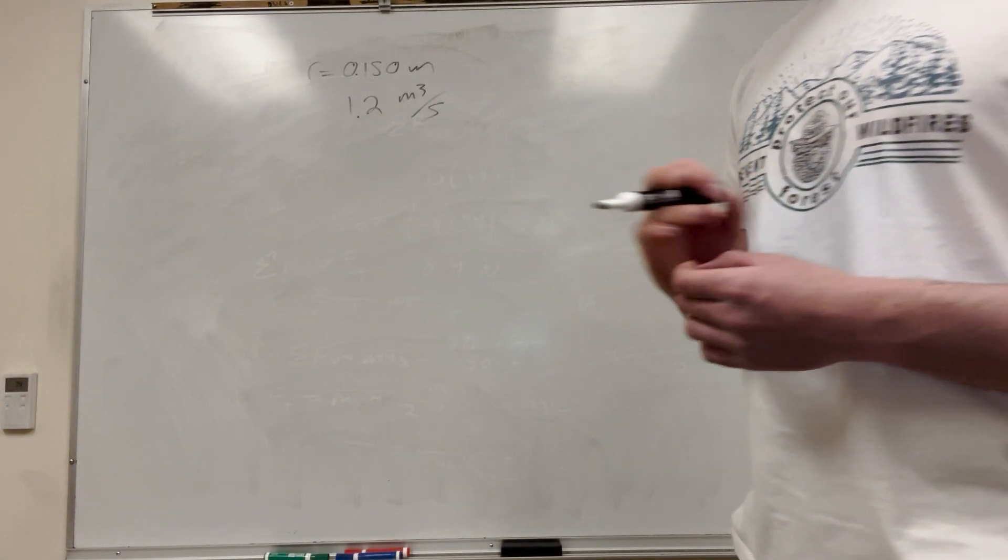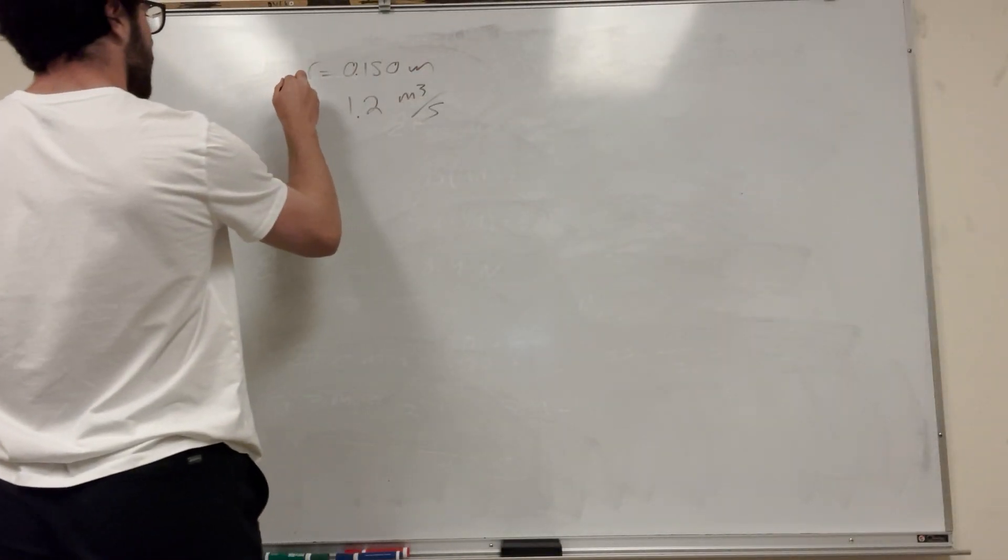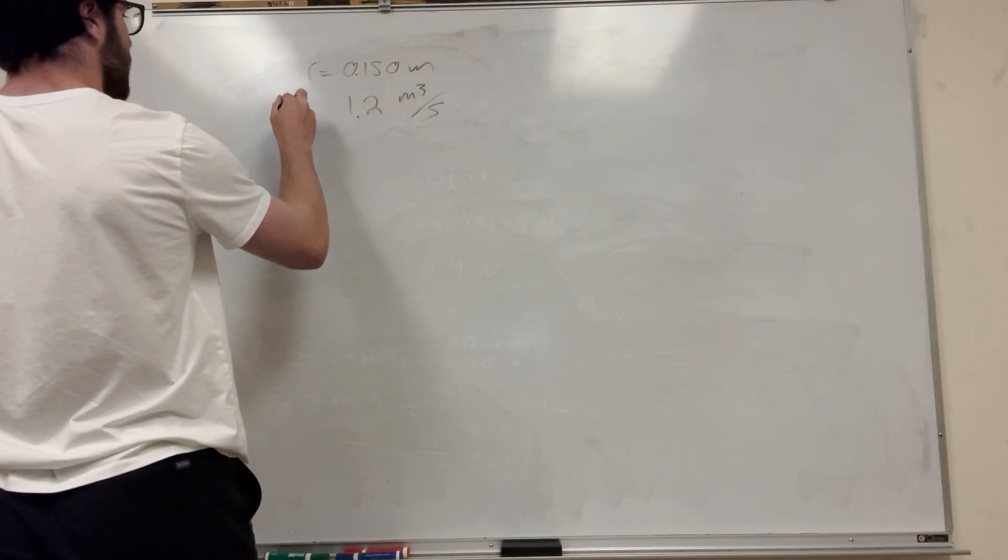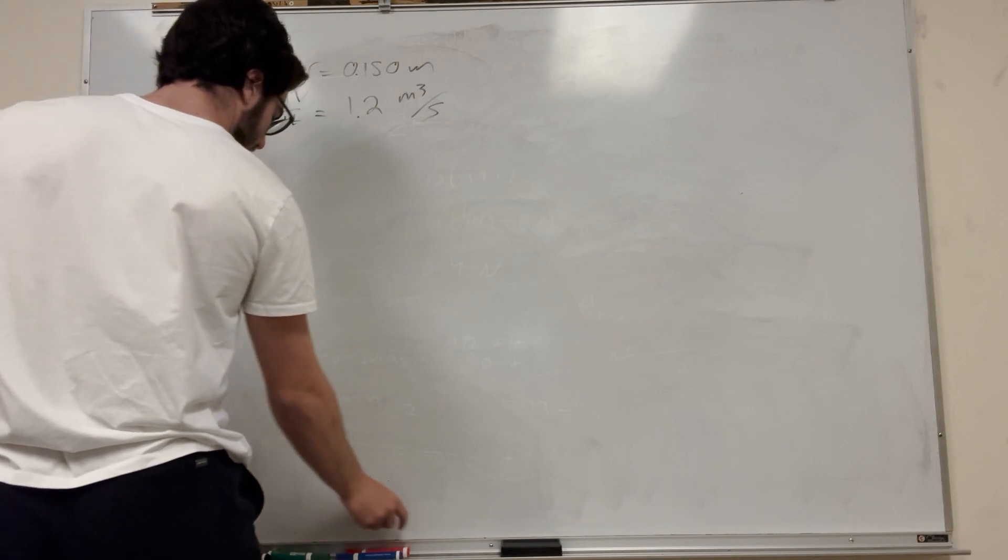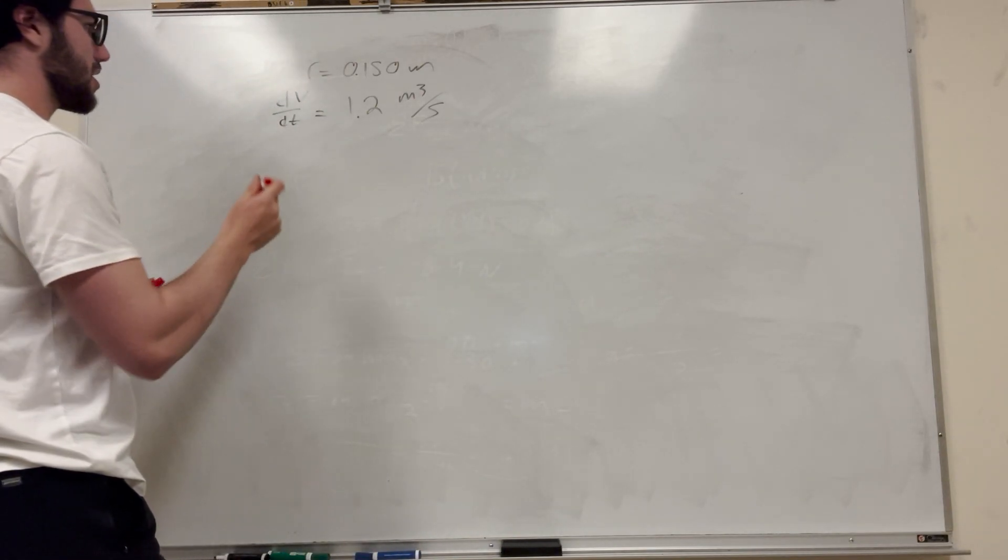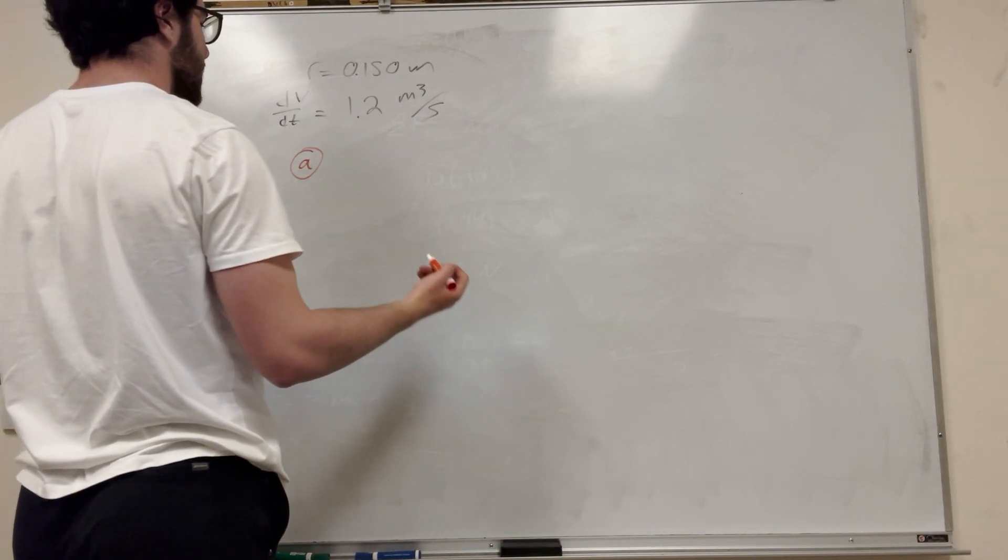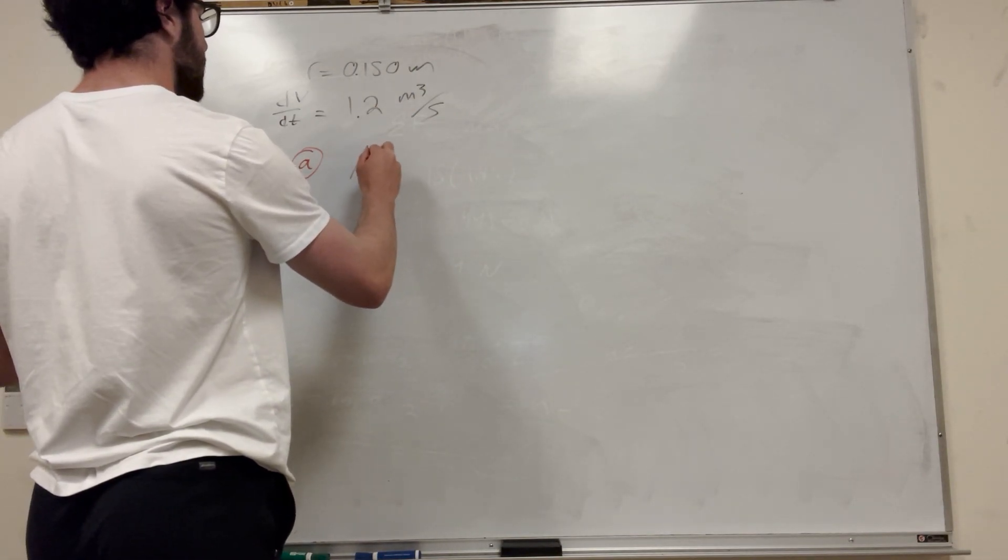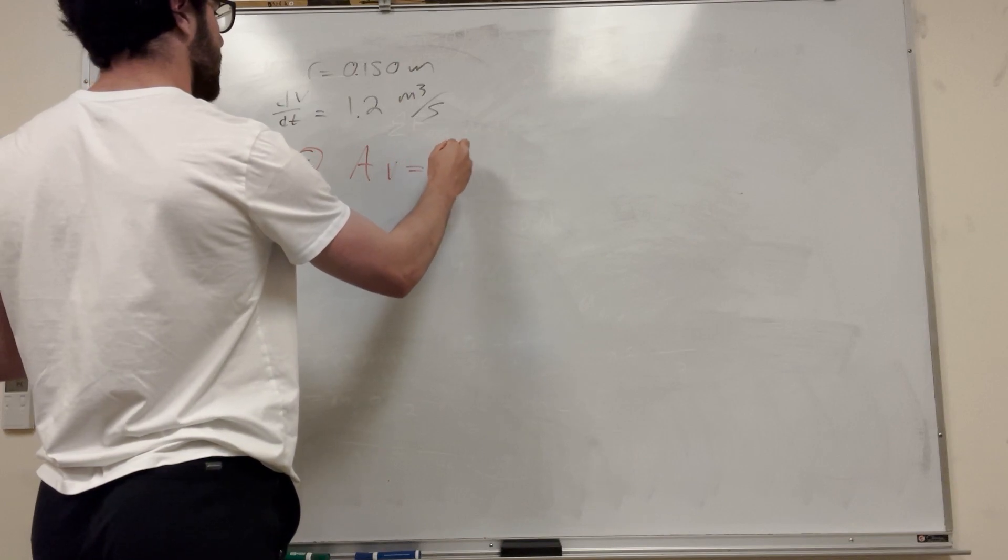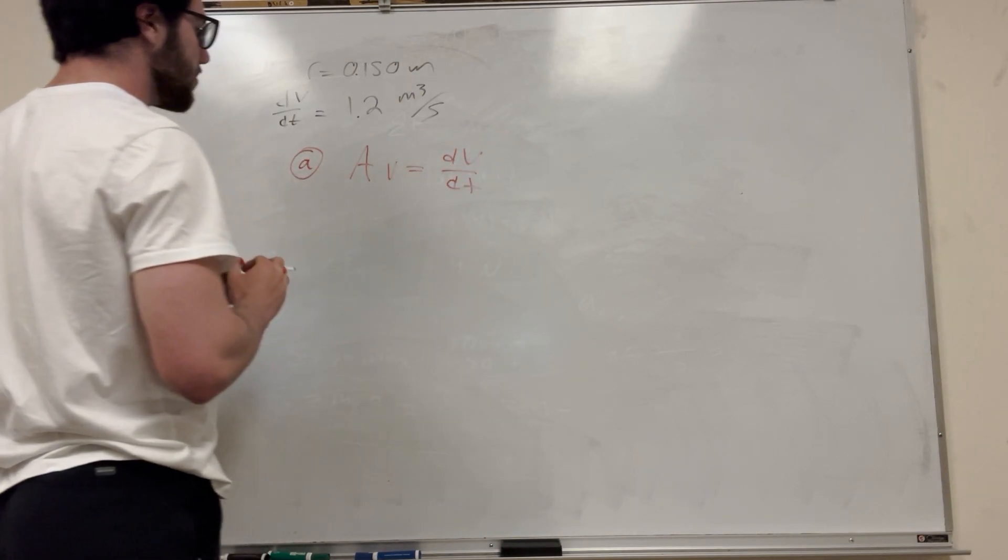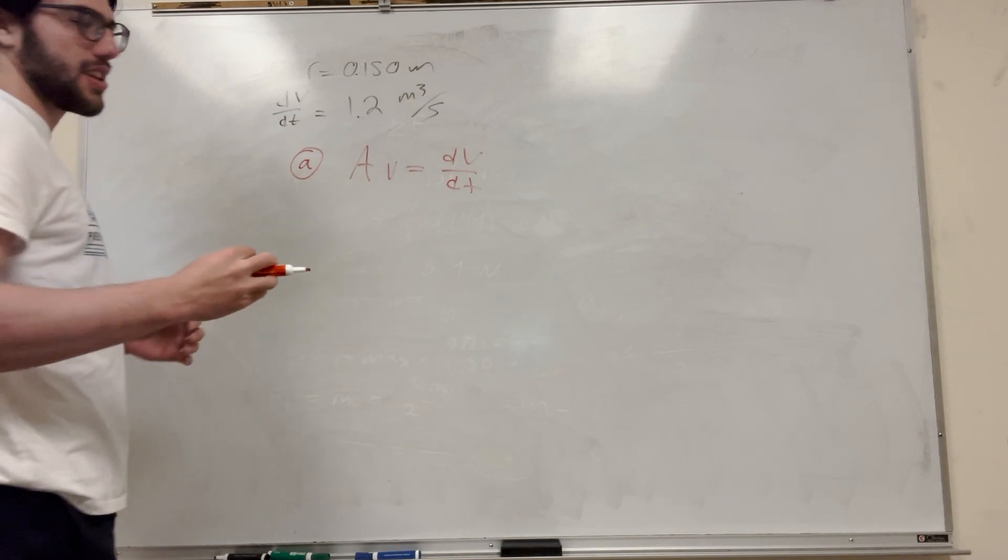Part A asks: what is the speed of the water at this point? This is change in volume over change in time, not change in velocity. So our equation for this is area times velocity equals the change in volume over change in time. The units work out for this.